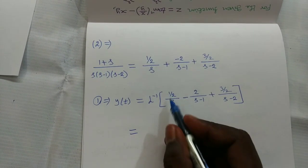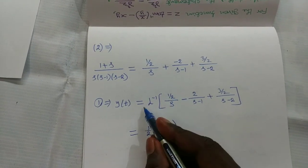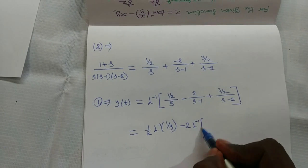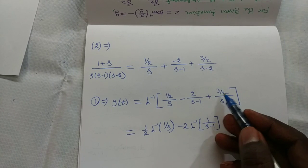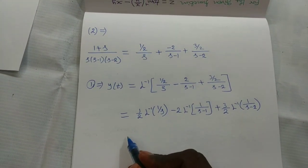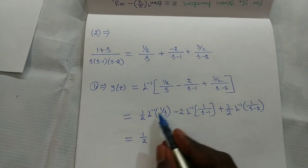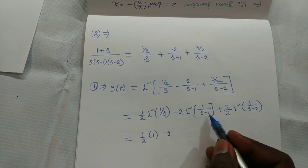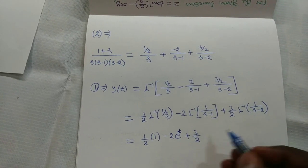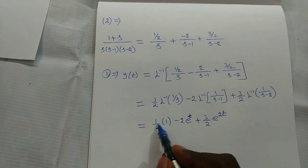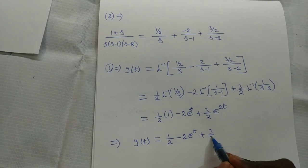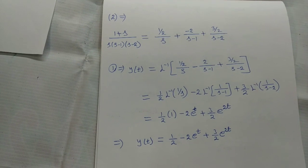Taking the inverse Laplace transform using the formula L inverse of 1 by (s minus a) equals e to the power at: y of t equals 1/2 times L inverse of 1/s minus 2 times L inverse of 1/(s minus 1) plus 3/2 times L inverse of 1/(s minus 2), giving the solution y of t equals 1/2 minus 2 e to the power t plus 3/2 e to the power 2t.